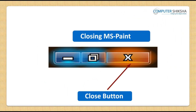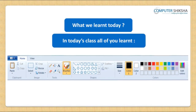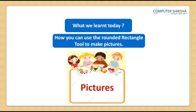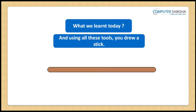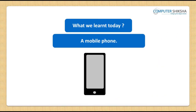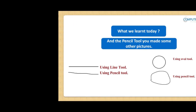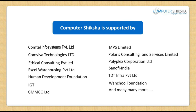Since today's class ends here, all of you close your paint file and properly shut down your computer. In today's class, all of you learned what is the Rounded Rectangle Tool, how you can use it to make pictures, what is the Pencil Tool, what is the Airbrush Tool, and using all these tools you drew a stick, a mobile phone, and a river with a boat in it. Also, using the Brush Tool and the Pencil Tool, you made some other pictures. Thank you.